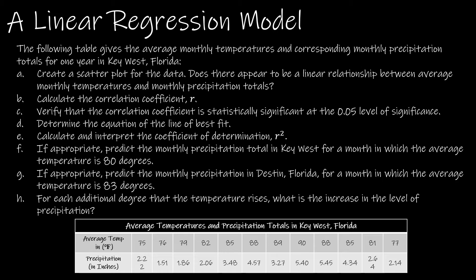So I want to create a scatterplot, and then I need to make sure that it appears to be linear. Then I'm going to calculate R, and then I'm going to make sure that R is statistically significant at the 0.05 level of significance. That's all the stuff from 12.1. From 12.2, we're going to determine the equation of the line of best fit. We're going to calculate R squared, the coefficient of determination.